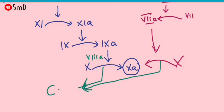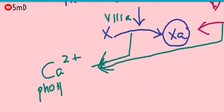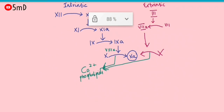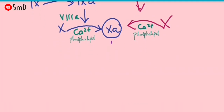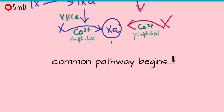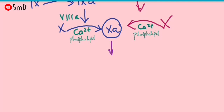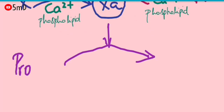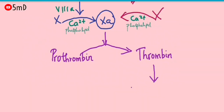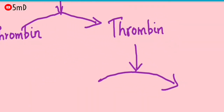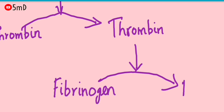Factor 8 acts in the intrinsic pathway, whereas ionic calcium and platelet phospholipids act in both the intrinsic and extrinsic pathways. Activation of Factor 10a is a common endpoint for both pathways, after which a common pathway is followed. Activated Factor 10 activates prothrombin to thrombin, and this thrombin helps in the activation of fibrinogen — the soluble plasma protein — into fibrin, forming a stabilized clot.